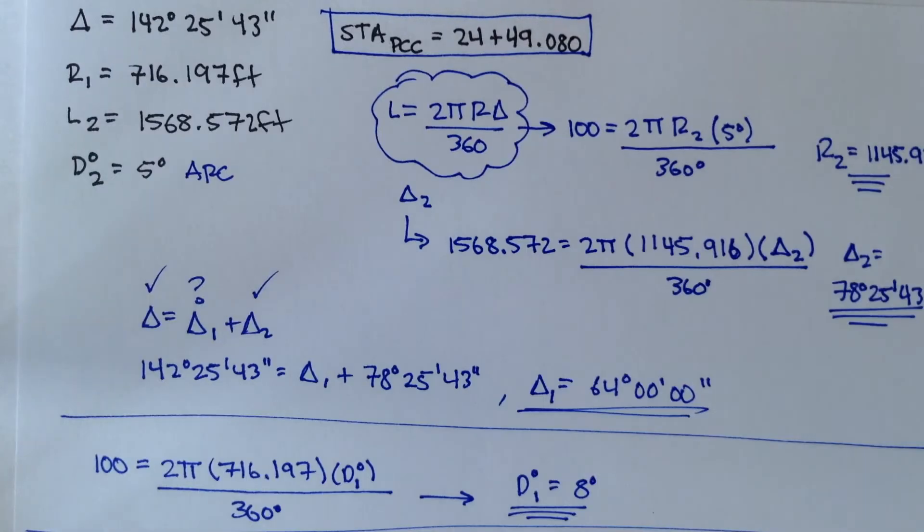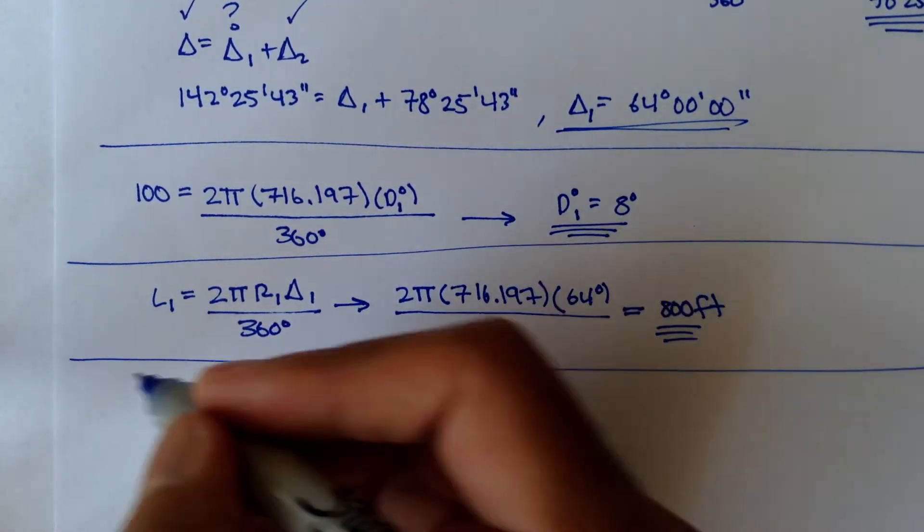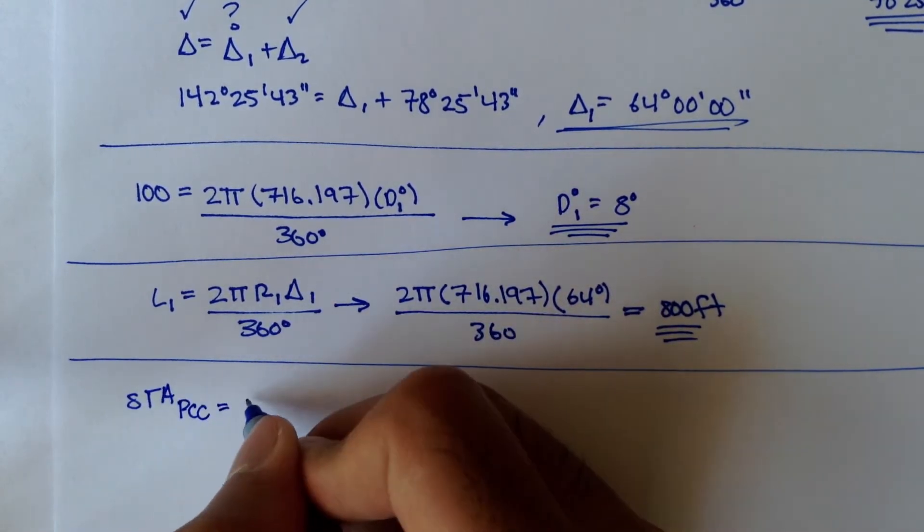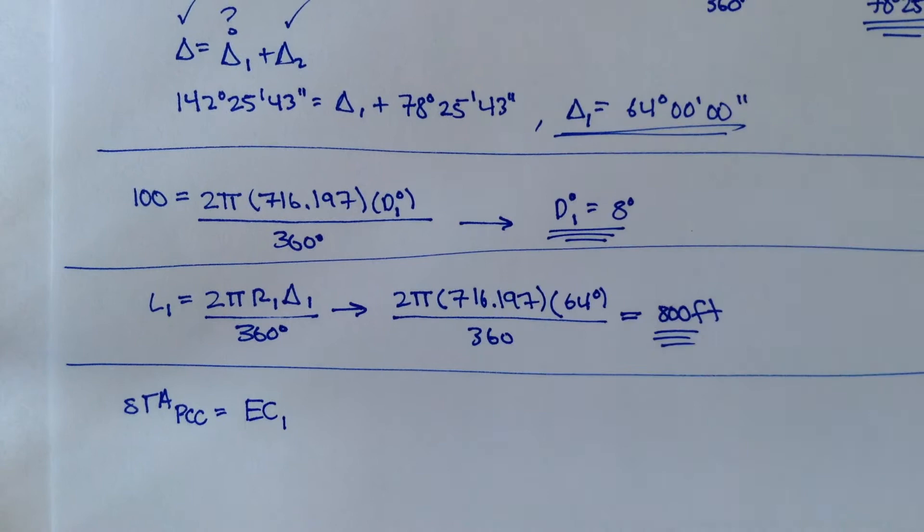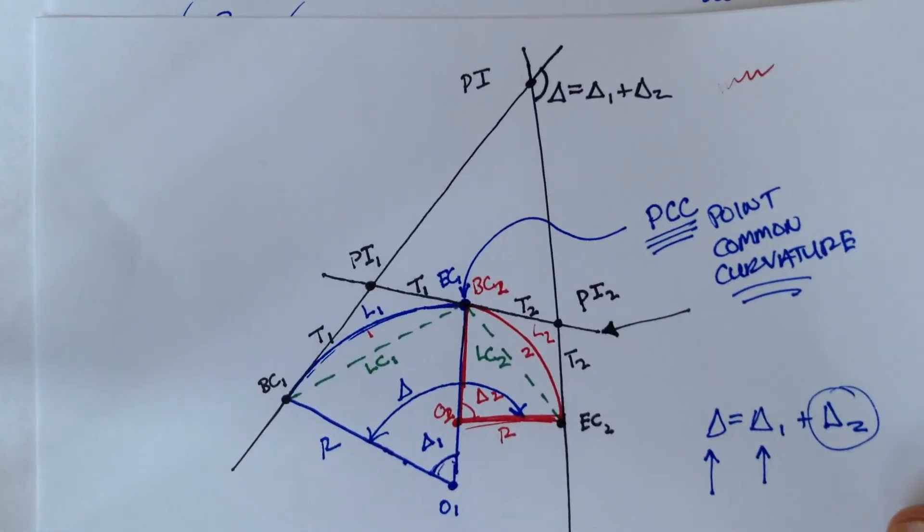So we can say that the station, the station point of common curvature is equal to EC1. And we need to use this information to figure out what PI1 is.